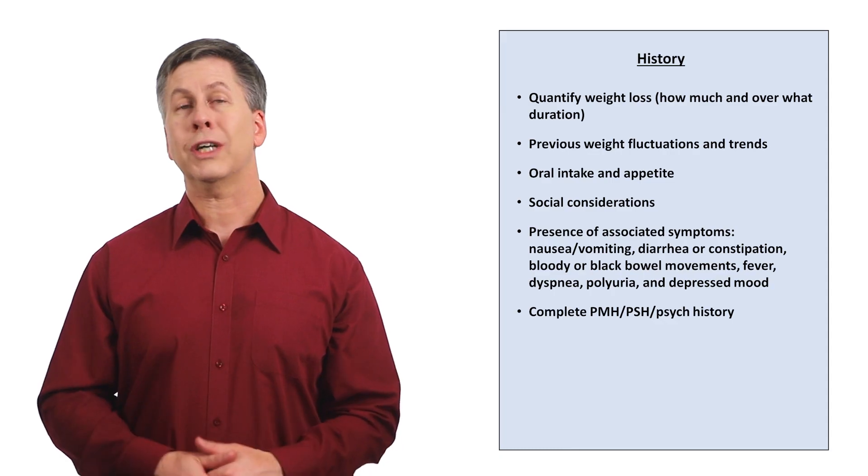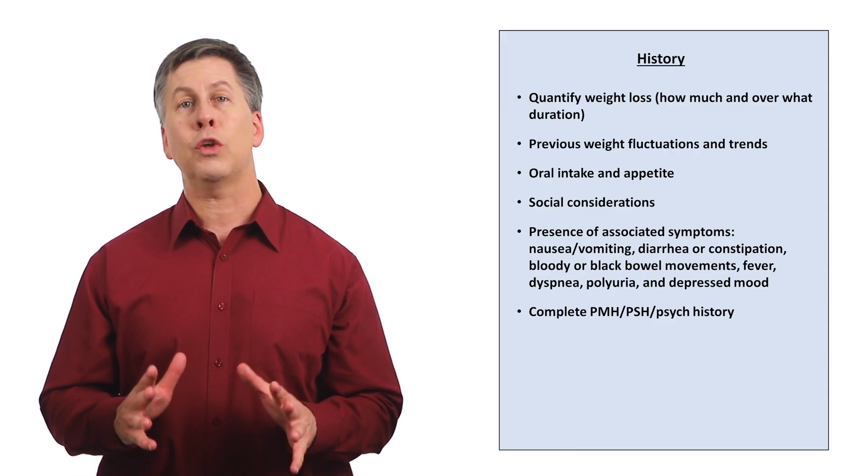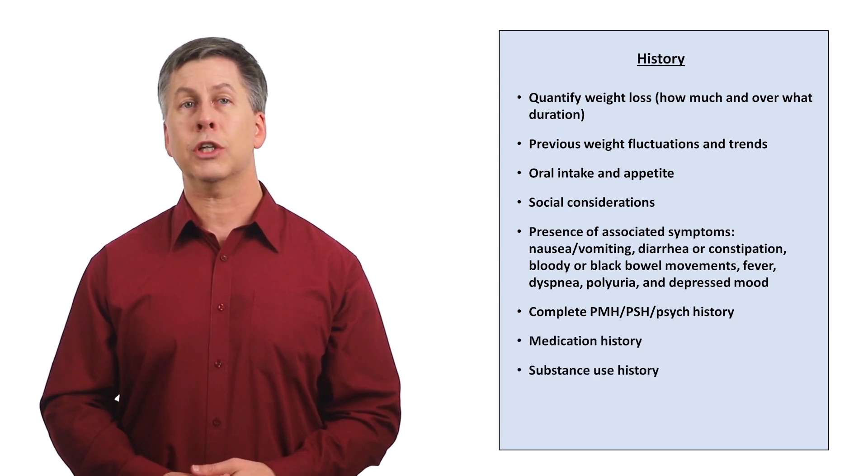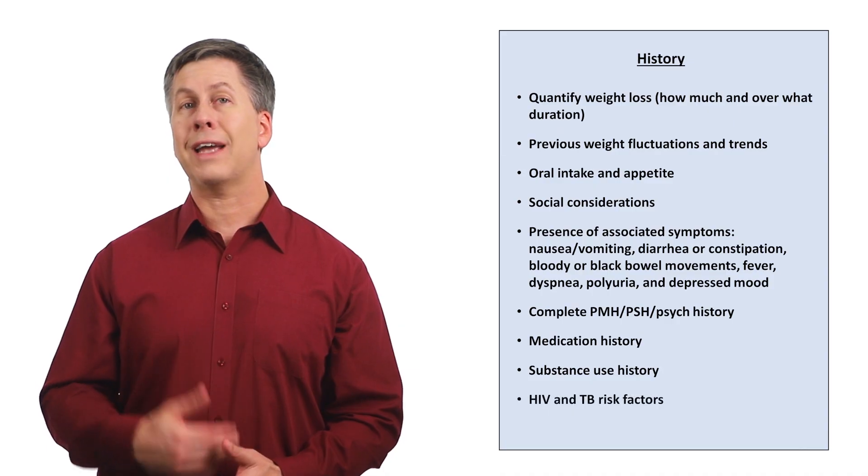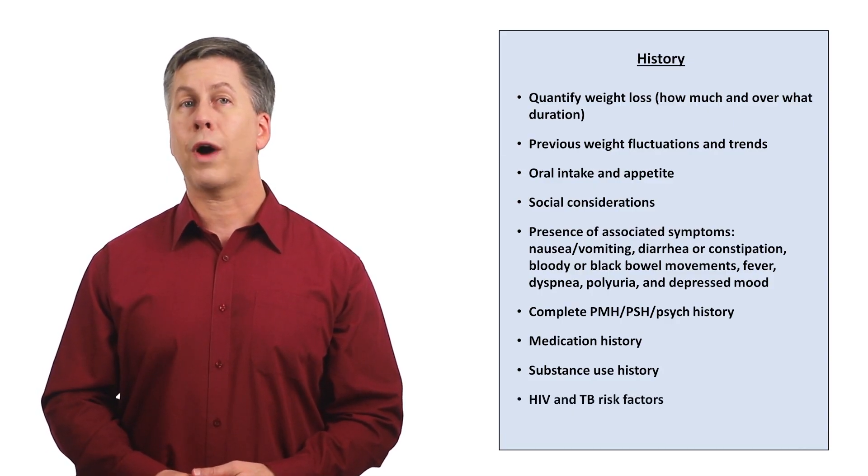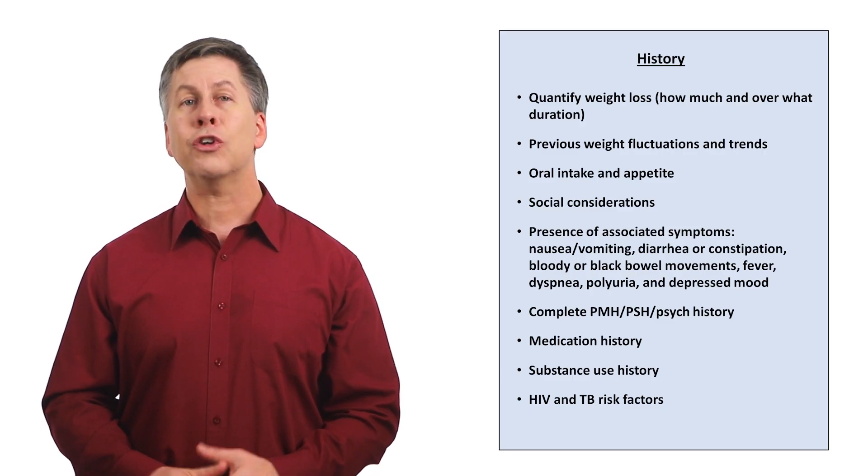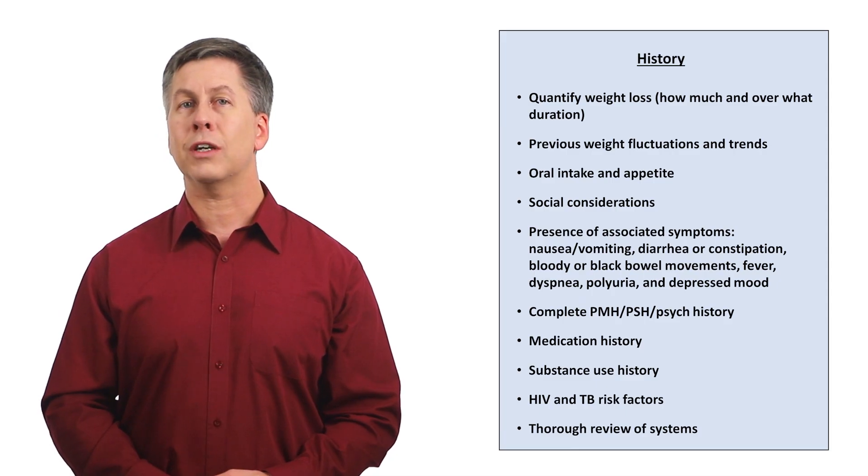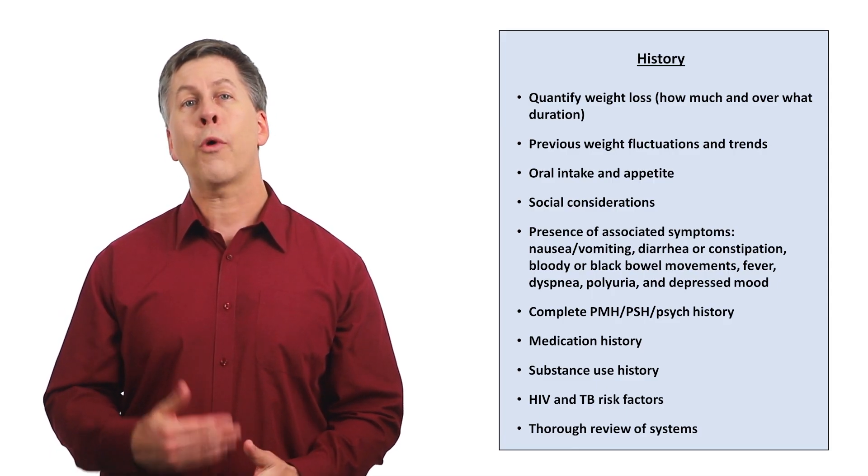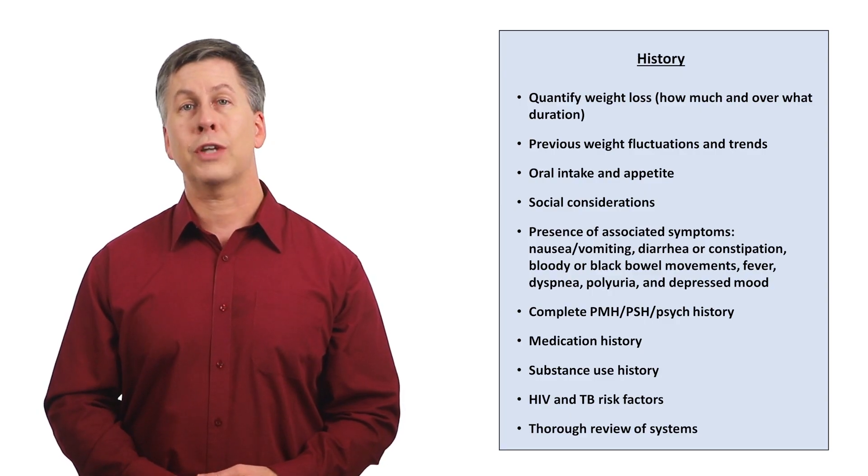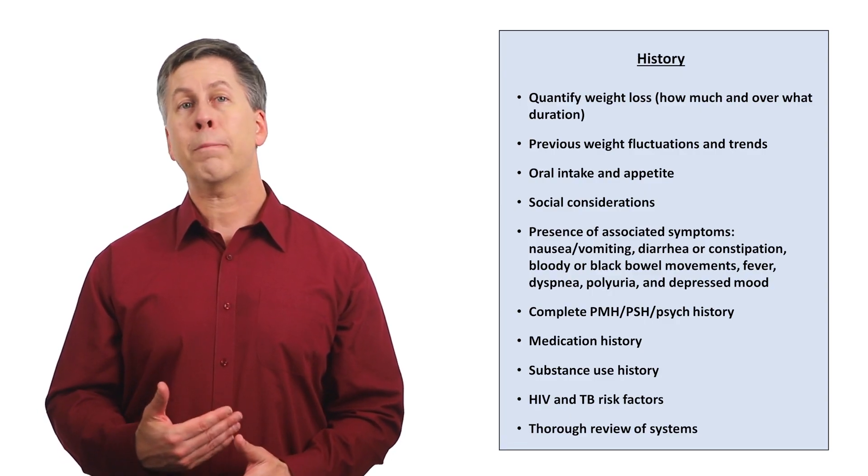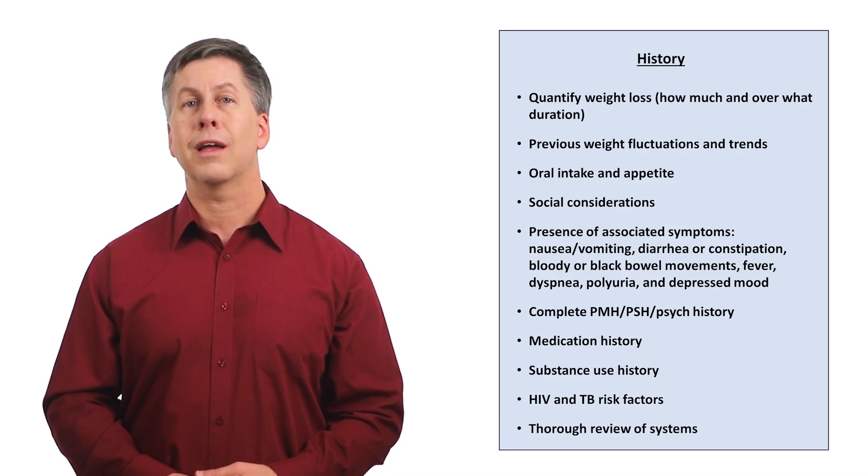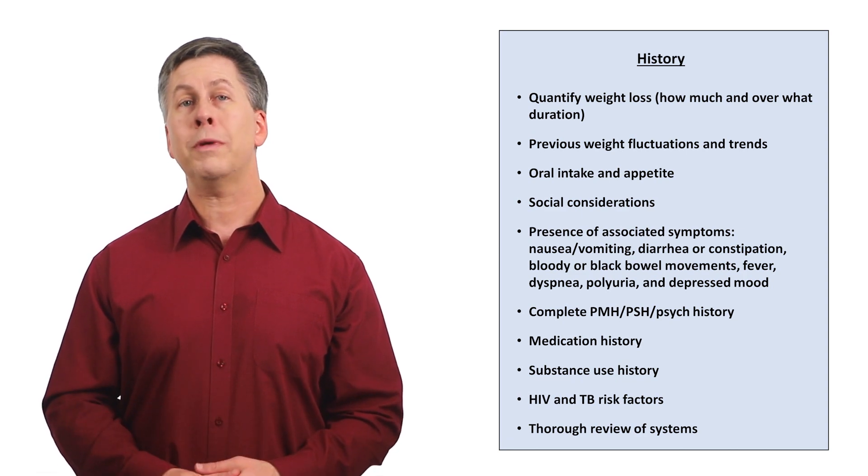Take a complete medical, surgical, and psychiatric history, even more complete than you would for most other complaints. A medication and substance use history. Ask about HIV and TB risk factors, the former of which will require a sexual history. And go through a very thorough review of systems. Even a small, random detail, which the patient might not think is important, could point you towards a likely explanation. For example, changes in the character of their hair might point towards thyroid disease. Changes in vision could suggest undiagnosed diabetes. And clubbing of their fingers could be a sign of lung cancer.